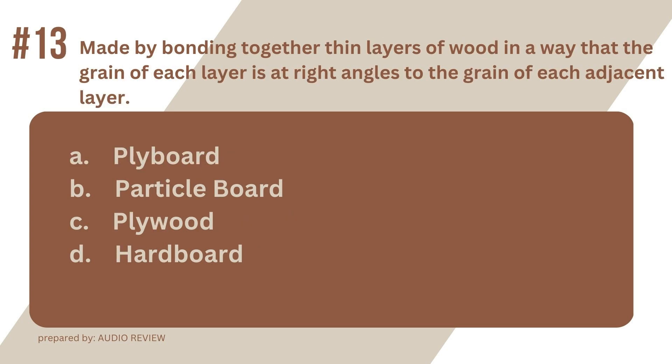Question 13. Made by bonding together thin layers of wood in a way that the grain of each layer is at right angles to the grain of each adjacent layer. A. Ply board. B. Particle board. C. Plywood. D. Hard board. The answer? It's C. Plywood. Made by bonding together thin layers of wood in a way that the grain of each layer is at right angles to the grain of each adjacent layer. Plywood.